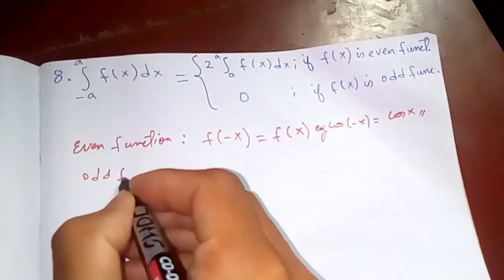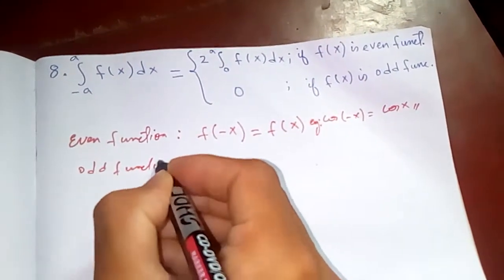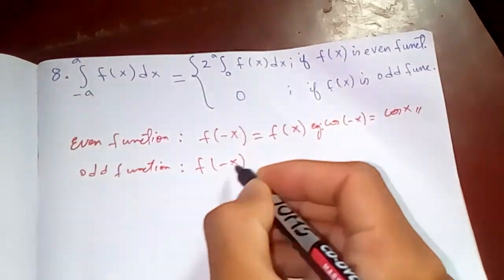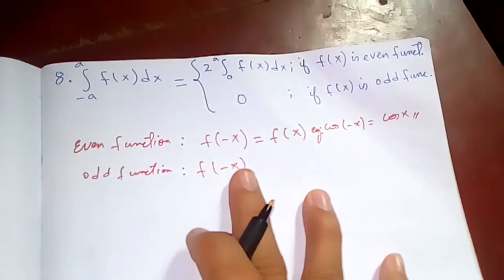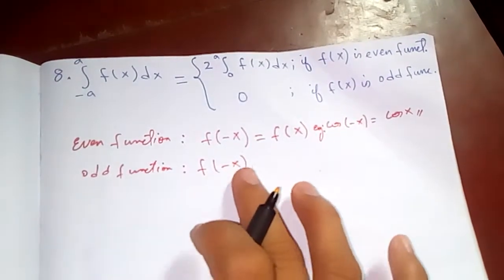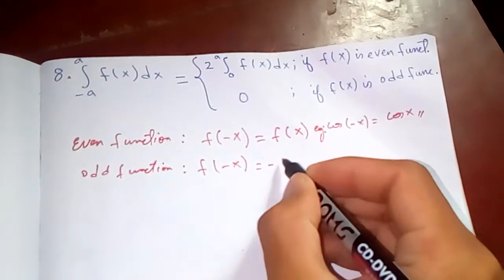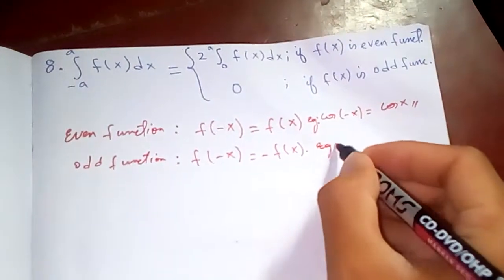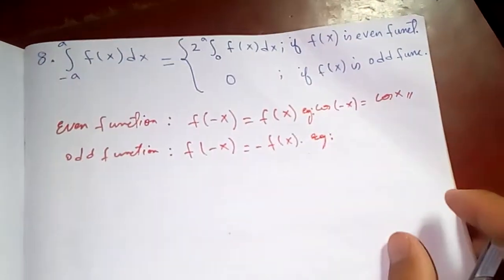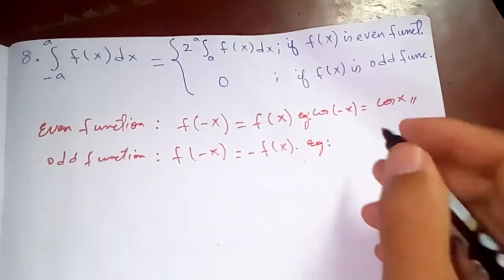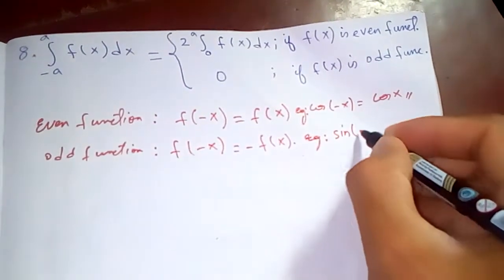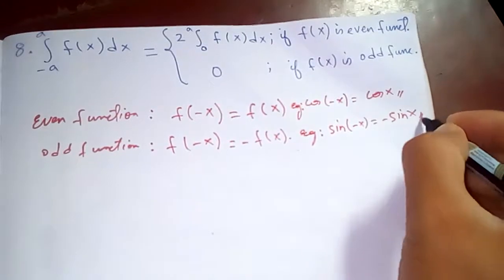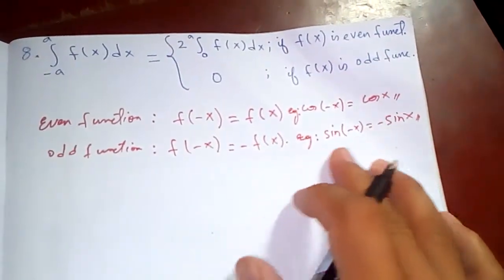An odd function is just the opposite. If you have a function f(x) and you take f of negative x, you get negative f(x). For example, sine of negative x equals negative sine x, meaning sine is an odd function.